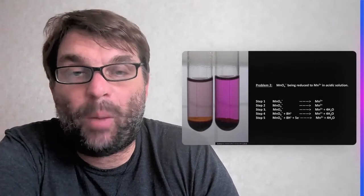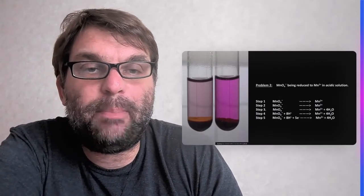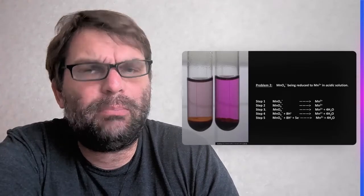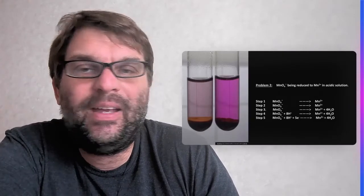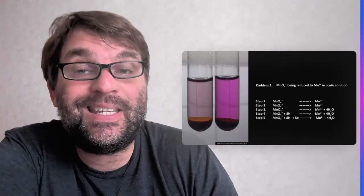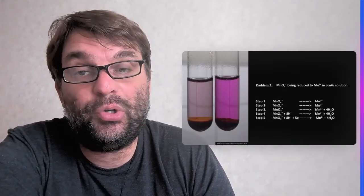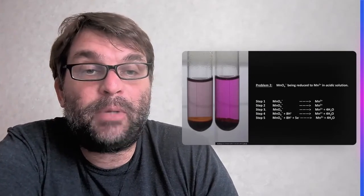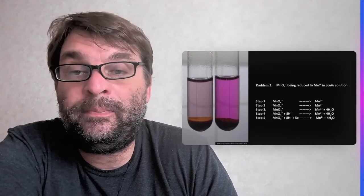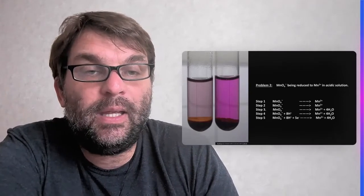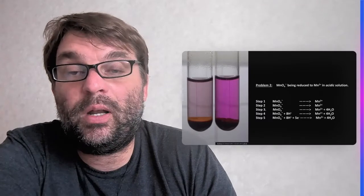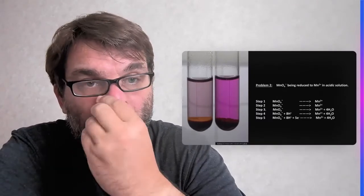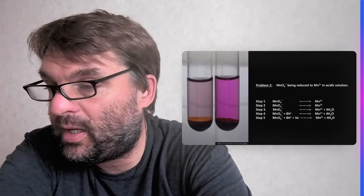Another example, this is a little bit more complicated. So this is where the permanganate anion is being reduced to the manganese 2 plus cation. And this time it's an acidic solution, so we have to consider protons. So the first step is permanganate going to manganese 2 plus, no problem. And then the permanganate again, we don't have to worry about anything around the hydrogens, so we just got to concern ourselves with the oxygens.